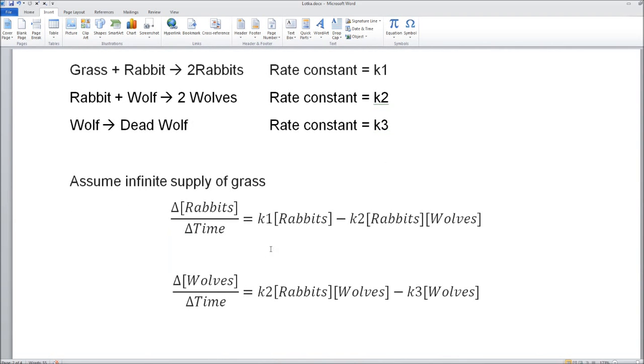So if we assume that the grass is not limiting anything, the change in the concentration or change in the population of the rabbits versus time is equal to a positive term here. In the first step, rabbits are increasing. It's equal to k1 times the number of rabbits. And in the second step, the rabbits are being destroyed. So there's a minus k2 times the number of rabbits times the number of wolves.